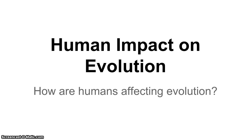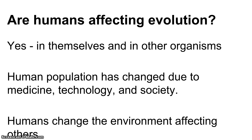Today's lecture is going to be on human impact on evolution — how evolution is happening in the world today and how humans are affecting it. The essential question is: are humans affecting evolution? And the answer is yes. They can do this through things like medicine, technology, and society, and also because humans are changing the environment around them, forcing organisms to adapt and change to the new environment humans are creating.